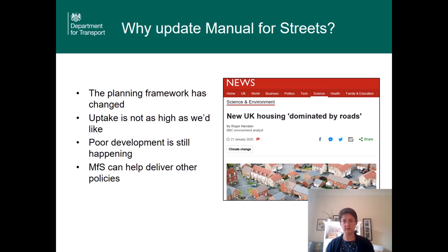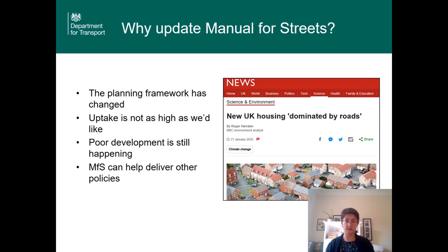So it's clear that Manual for Streets is important and does deliver good street design. But why does it need updating? For starters it's 13 years old — published in 2007 — and the National Planning Policy Framework needs to be reflected in it given the manual's role in residential developments. Second, Manual for Streets is not as widely used as we would like. Some are still using the Design Manual for Roads and Bridges and the aforementioned DB32. There is still a lot of poor development going in, with too much development designed to lock in car use and not giving residents real choice about how they move around.